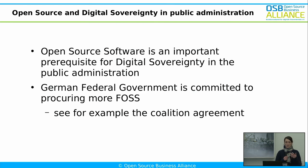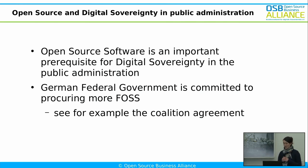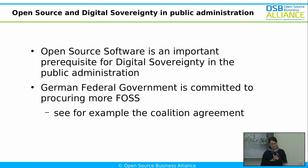The connection between open source and digital sovereignty, as Laura has mentioned earlier: open source is a very important prerequisite for digital sovereignty in the public administration. Open source ensures that you can review and adapt the source code. It ensures interoperability and enables the administration to change providers should it be necessary. In short, free and open source software is the way out of the very well-known vendor lock-in. Because of all these reasons, the German federal government is committed to procuring more free and open source software, stated so in multiple documents — most famously in the coalition agreement, which says that whenever software is developed or procured by the federal German government, it should by default be free and open source software.